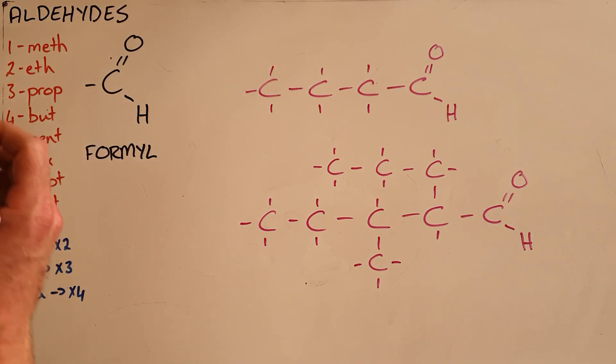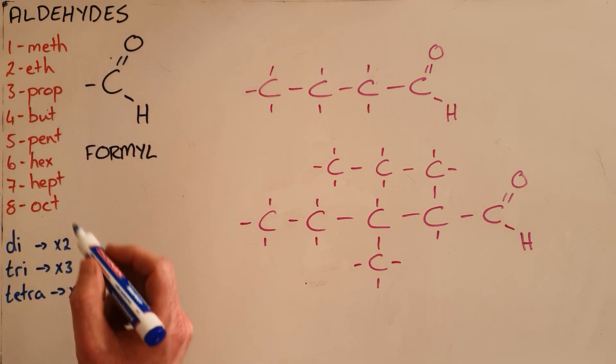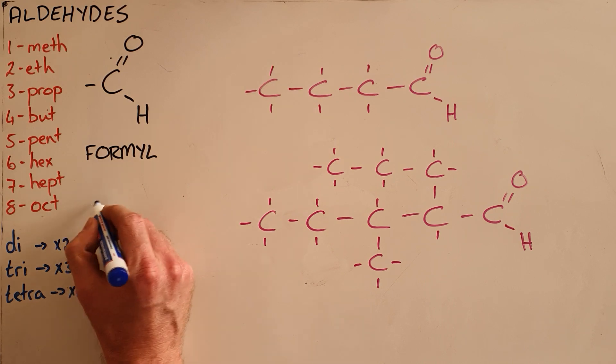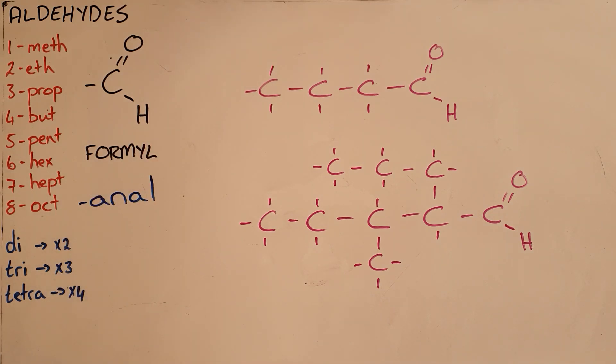Any compound that contains this formyl group is called an aldehyde and therefore gets the suffix 'anal'. What is unique about this formyl group is that since it only allows the carbon chain to extend in one direction, we do not need to indicate the position of that formyl functional group.